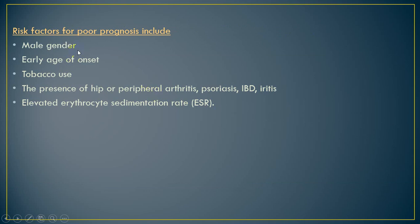What are the poor prognostic features in patients with ankylosing spondylitis? These can be summarized as: being male, early age of onset, smoking, presence of hip or peripheral arthritis, superadded psoriasis, inflammatory bowel disease, or eye involvement. Extra-axial manifestations indicate poor prognosis. Elevated ESR and CRP also indicate active disease and poor prognosis.